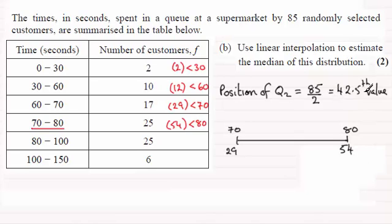So the 42.5th value is going to be somewhere in here. And I'm just going to say it's there for argument's sake, and that's Q2, and that's the 42.5th position.